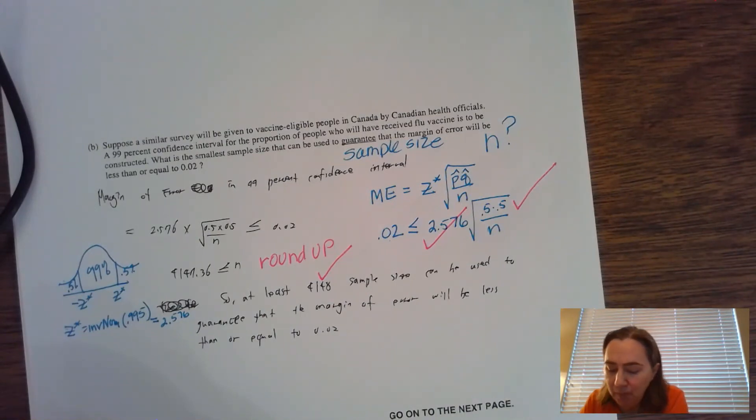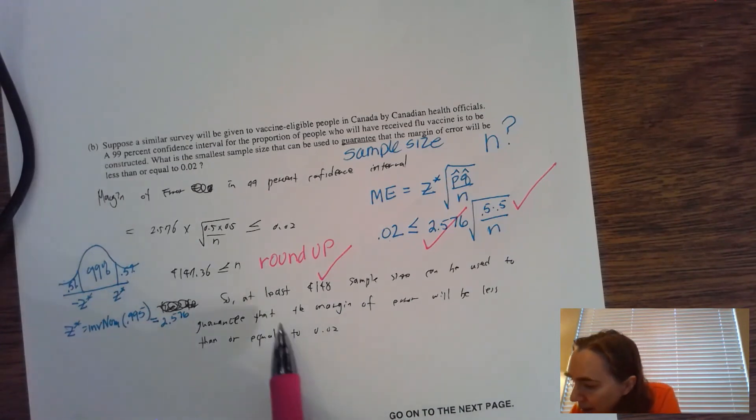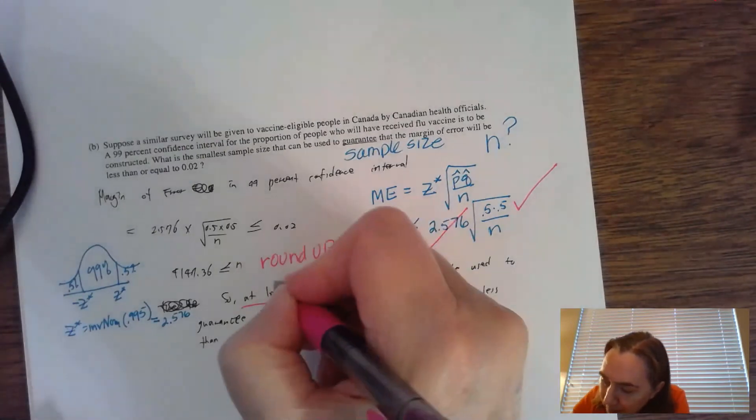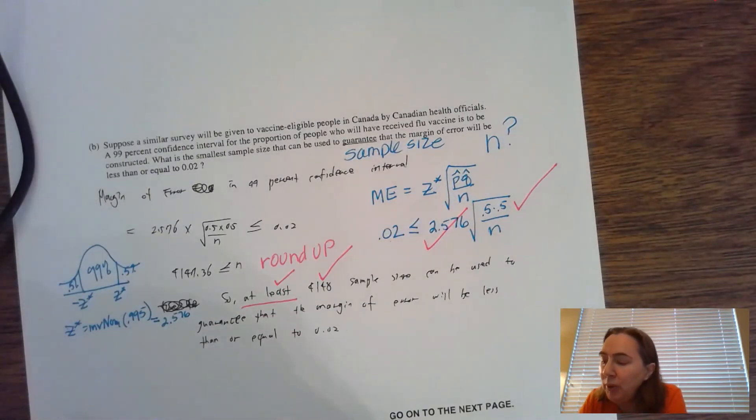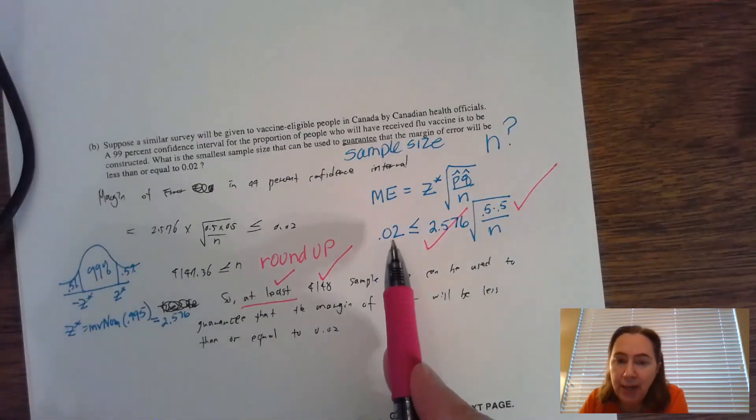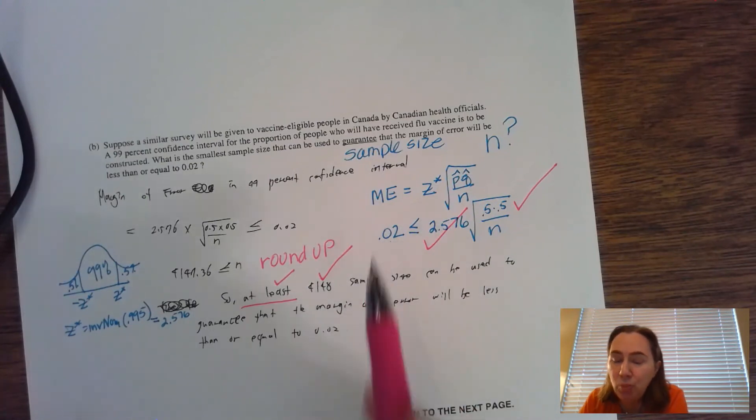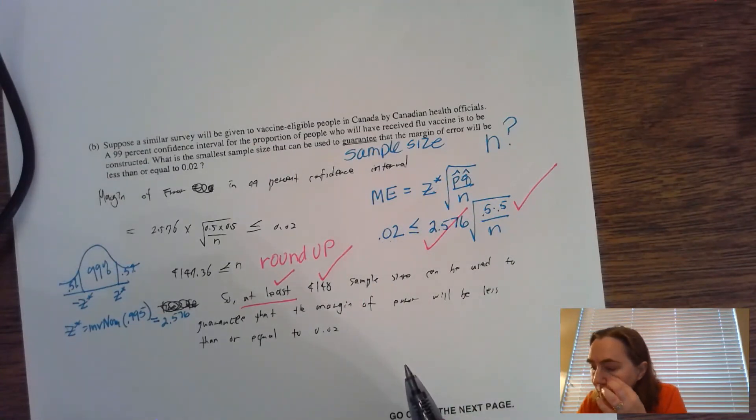But there's one more thing we're going to have to do: we're going to have to make sure we say it's that number or higher, or at least 4,148 Canadians. They say 'at least' right here because that's the only way that the margin of error can be 0.02 or less. The bigger the sample size, the smaller the margin of error is going to be.